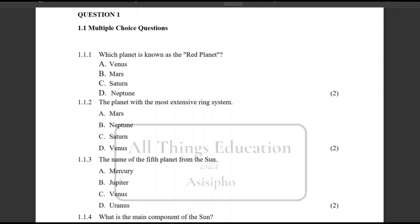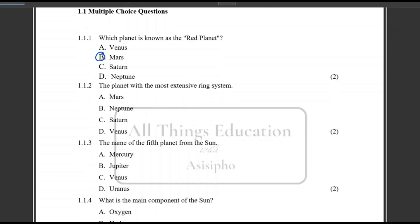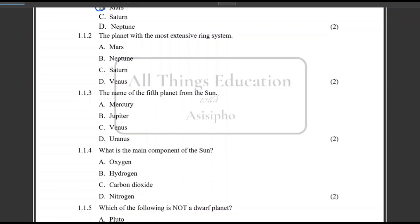Going back to the question, the planet that is known as the red planet. You are given four options and you need to choose the most correct one. In this case, the correct one is B, which is Mars. Remember, if you find a multiple choice question a bit confusing, start by eliminating the most incorrect answer. Even if it's one or two, then be left with the two that you need to decide from. That's the strategy. But never leave an answer empty. Please don't leave spaces when you're answering a test or an exam.